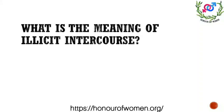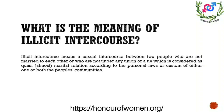What is the meaning of illicit intercourse, since this term was used in the previous section and will appear in the remaining sections as well? Illicit intercourse means sexual intercourse between two people who are not married to each other, or who are not under any union considered quasi-marital according to the personal laws or customs of either person's community. So if you are not married, engaged, or deemed to be married and you have sexual intercourse, that would be termed illicit intercourse.